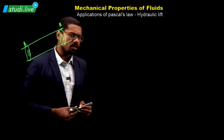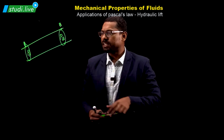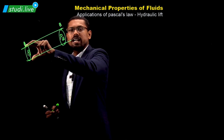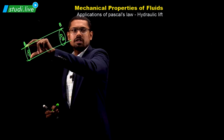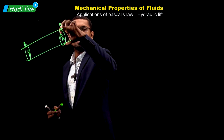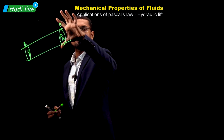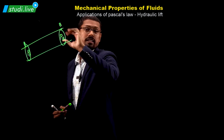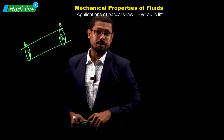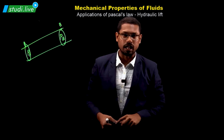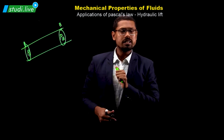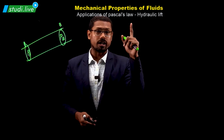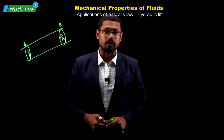The areas are not the same in this pipe. One end is thinner, where the area is less, and the other is larger. Though there is a difference in the areas, the pressure is still the same. One application where Pascal's law is used is called a hydraulic lift.